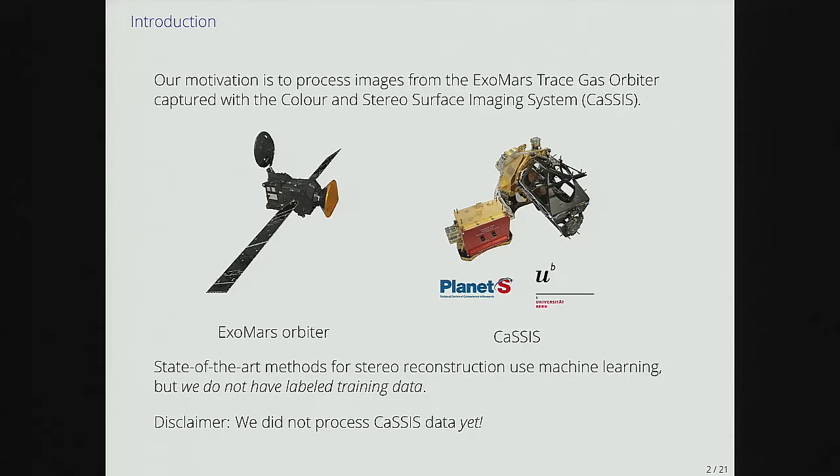The point we want to solve is to reconstruct the surface of the planet. For stereo reconstruction, state-of-the-art systems are using machine learning. Usually you get a training set with ground truth, train a heavy machine learning system, and build the 3D depth on new images. In our case, due to the mission, we do not have training data. We could train on other data sources, but we know that training on the same data you have to process improves performance. Disclaimer: we have not processed the CASIS data yet, which just arrived after we finished this part of the work.